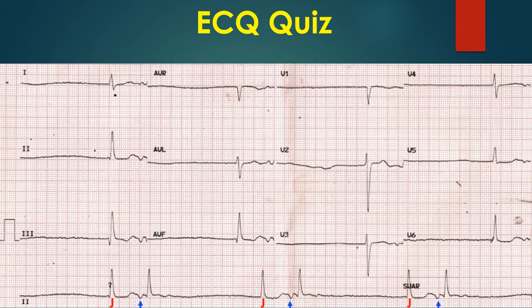But there is a caveat. This bigeminal rhythm appears to be an escape-capture bigeminy. But typically, the second beat in an escape-capture bigeminy is a sinus beat. It appears that here escape-capture bigeminy occurs in the setting of a low atrial rhythm, with overall features suggesting sick sinus syndrome. As the capture beat is not a sinus beat, another possibility is escape-echo bigeminy, a rare type of bigeminy.